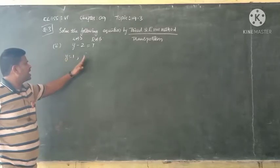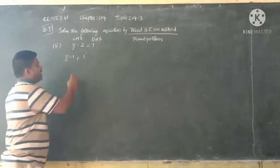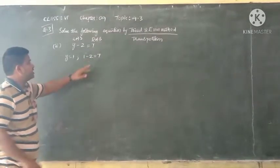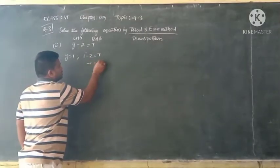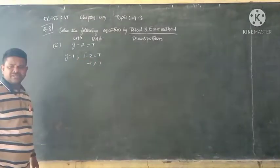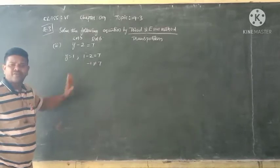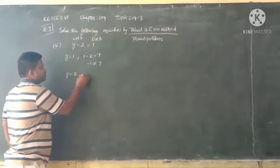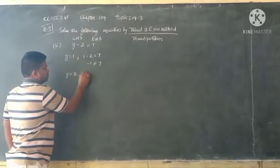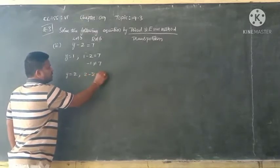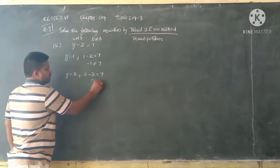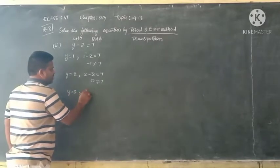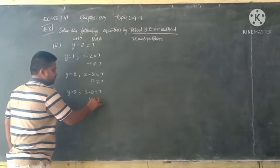When y equals 1, we get 1 minus 2 equals negative 1, which is not equal to 7. So y equals 1 is not a solution. When y equals 2, we get 2 minus 2 equals 0, which is not equal to 7. When y equals 3, we get 3 minus 2 equals 1, which is also not equal to 7.